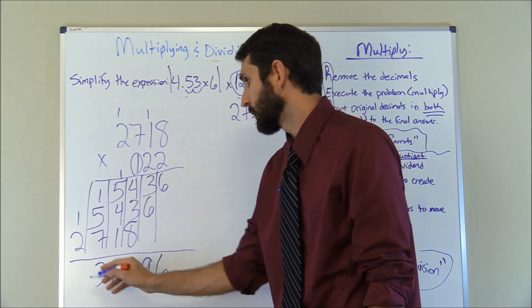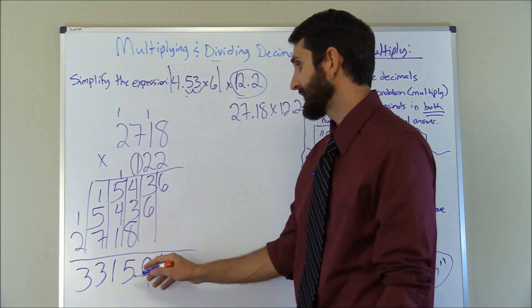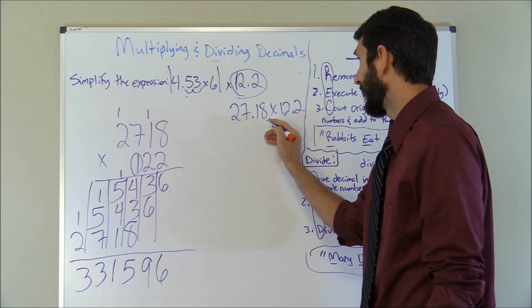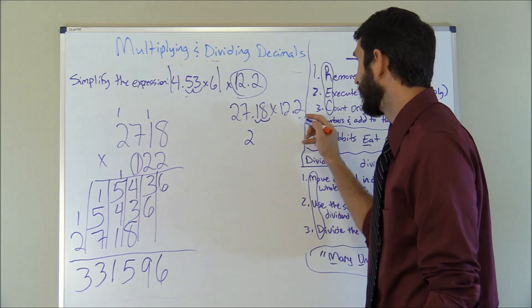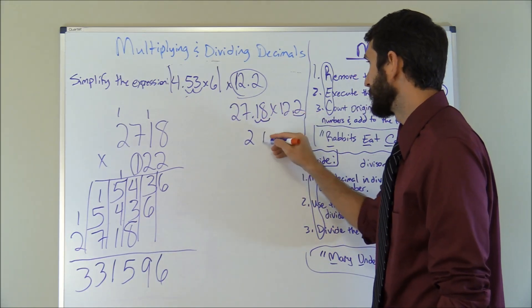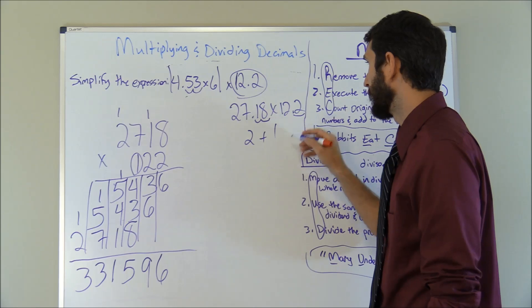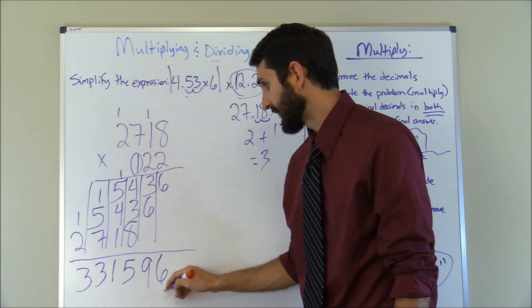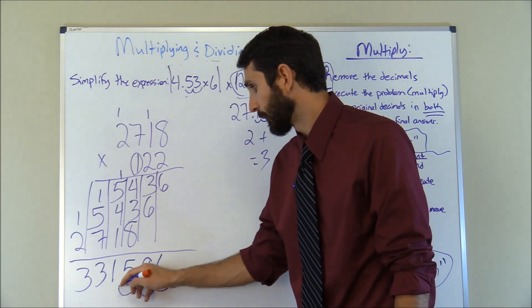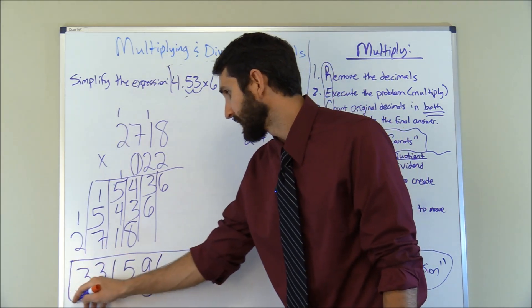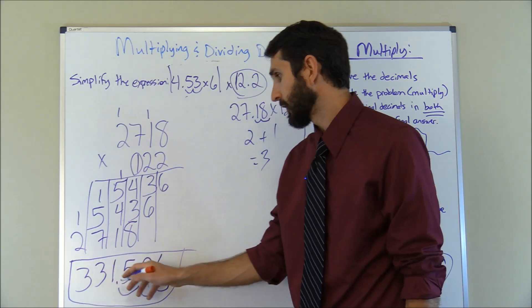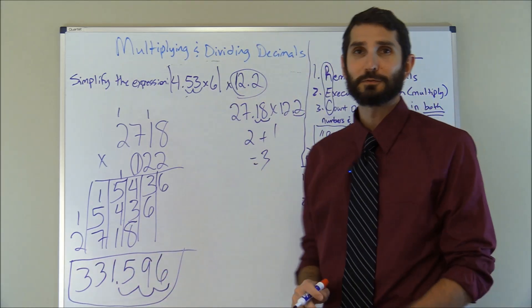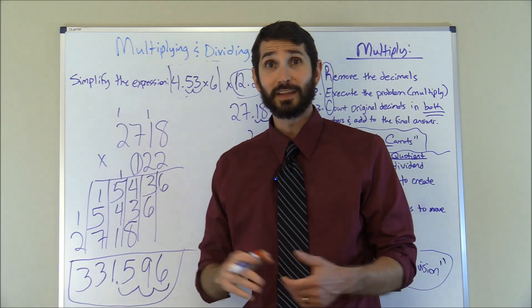Our raw result is 331596, but we need to place the decimal. Going back to our problem: 27.18 has two decimal places and 12.2 has one decimal place. Two plus one gives us three decimal places. Starting from the right — one, two, three — our final answer is 331.596. That's how you solve a three-part decimal multiplication problem.